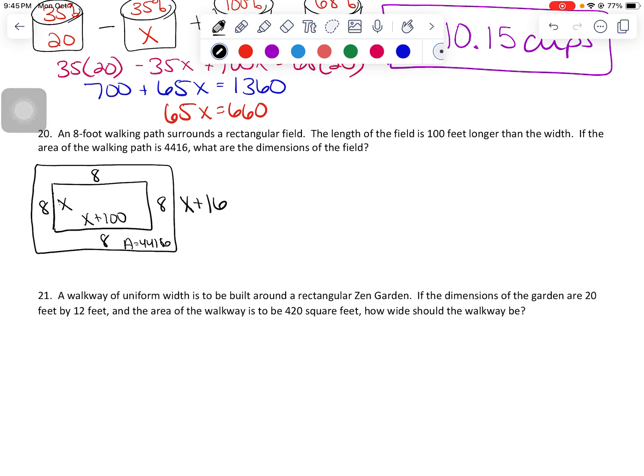And then this horizontal edge here is going to be the X plus 100 plus eight plus another eight. So X plus 116. These are going to be some fun numbers to work with. So the area of the big rectangle, X plus 16 times X plus 116, is equal to the area of the little rectangle plus the area of the border.